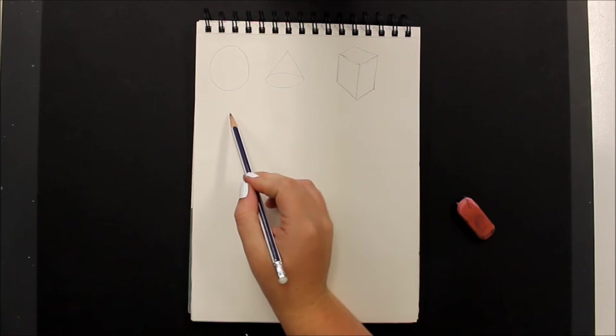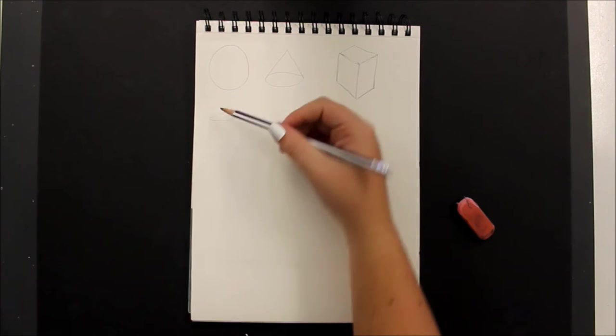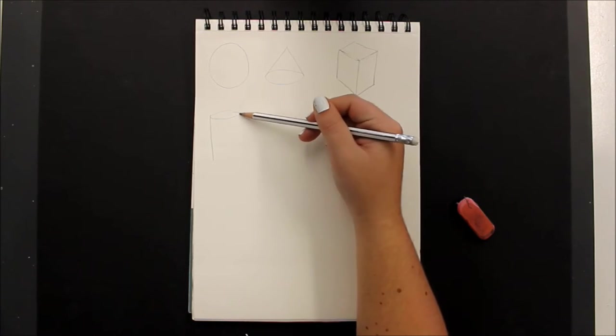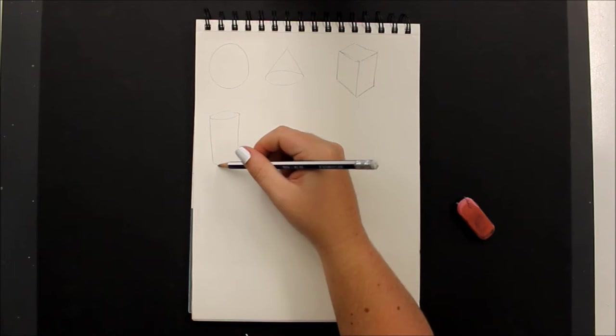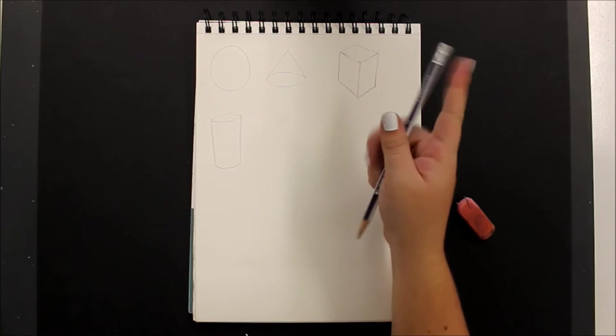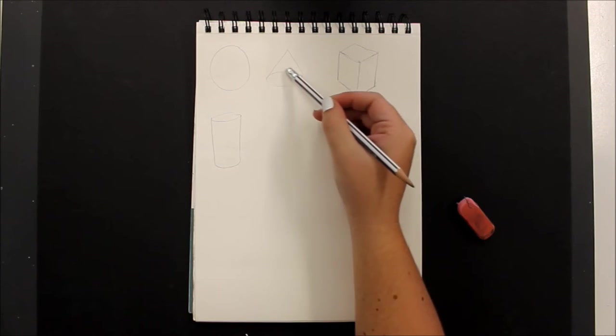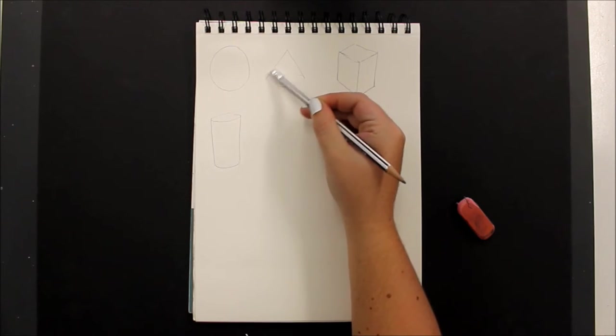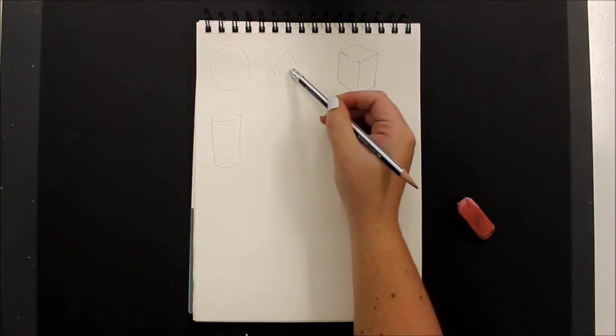A cylinder, and if you would like to erase the back side lines pretending that your object is not see-through, that's fine as well.